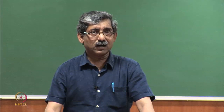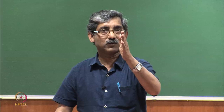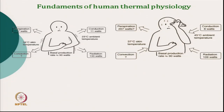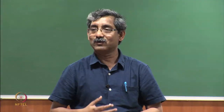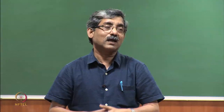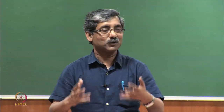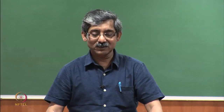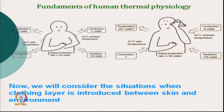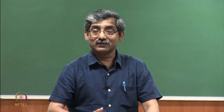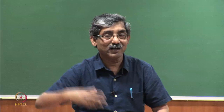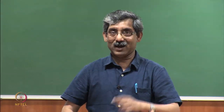To summarize, we have seen an unclothed person in cold condition at 23 degree Celsius and in warm condition at 45 degree Celsius — how to calculate and balance the heat flow. But this is not the actual situation. The actual situation is that we have to use some clothing. Now, we will consider the situation when a clothing layer is introduced between the skin and the environment. Until now, the skin was directly interacting with the environment.